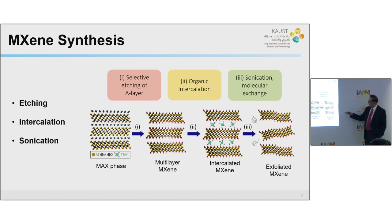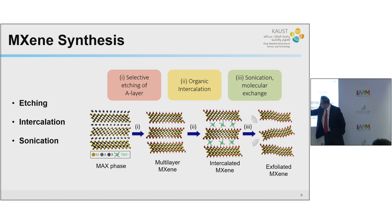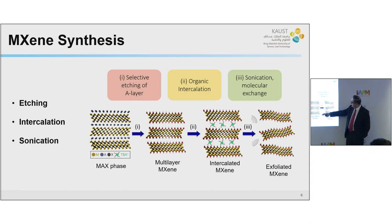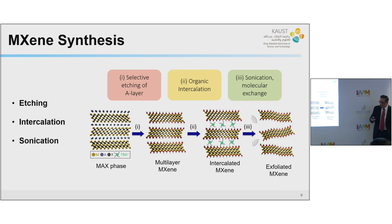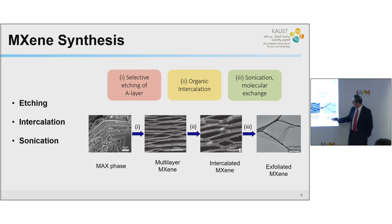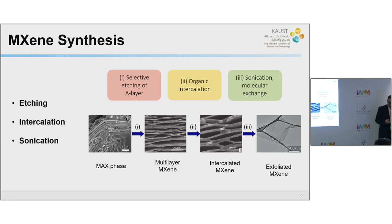Under the microscope, these SEM images show each step of the process: the MAX phase, the etched MXene, then intercalation with organic molecules or lithium, and finally exfoliation with sonication to get even thinner sheets. This is how they look under the microscope — going from the MAX phase to the multilayer MXene to the intercalated MXene and then single sheets.